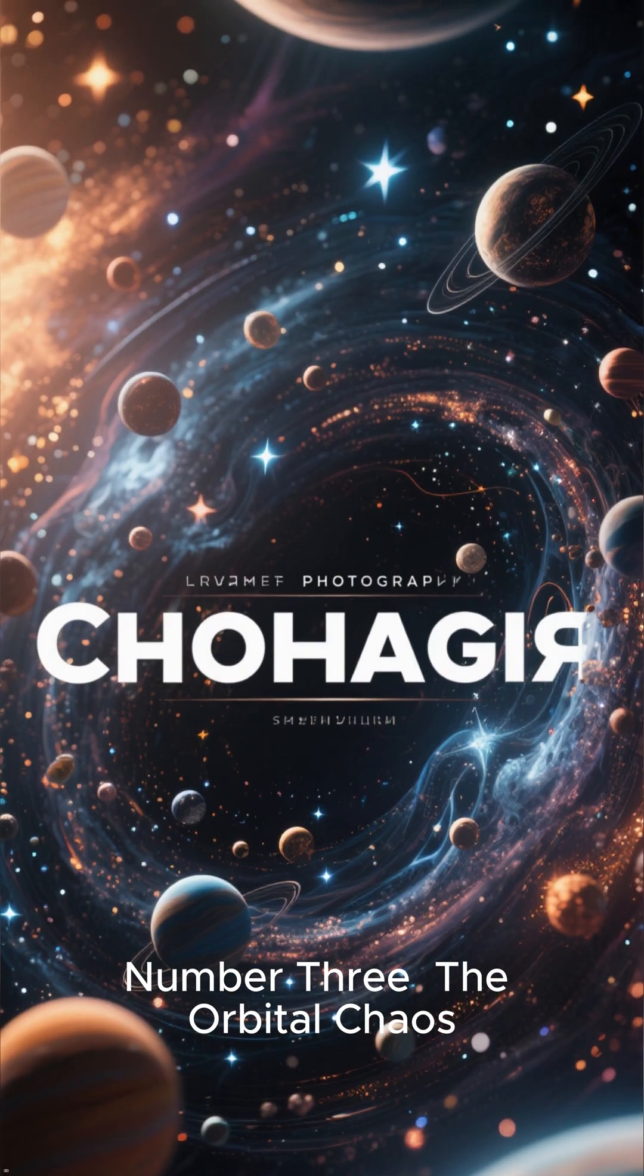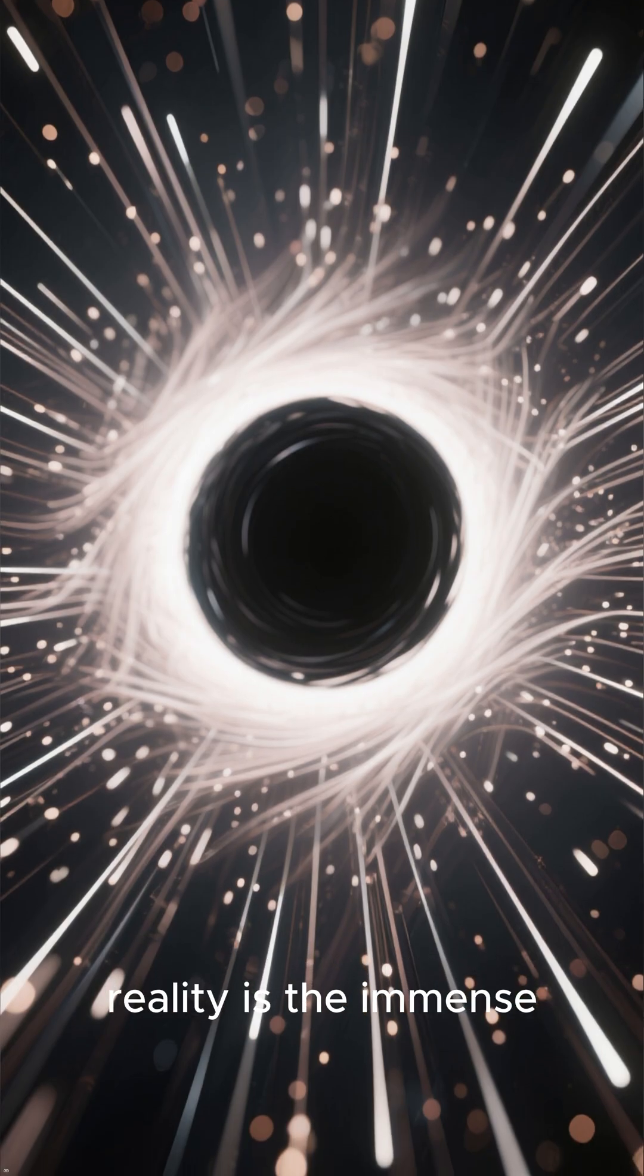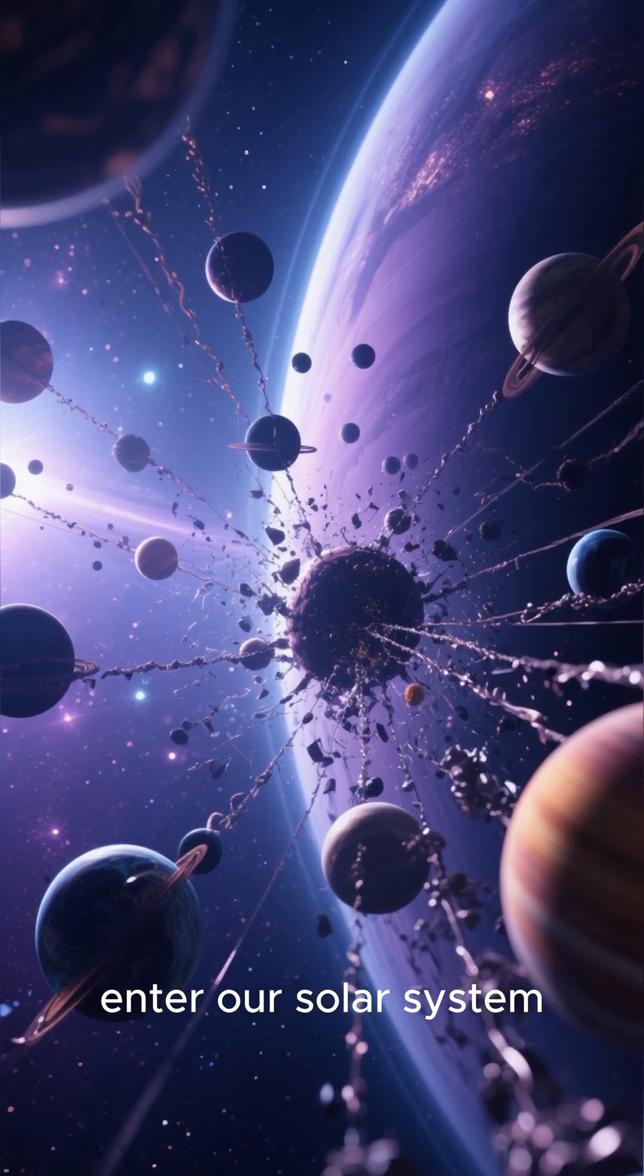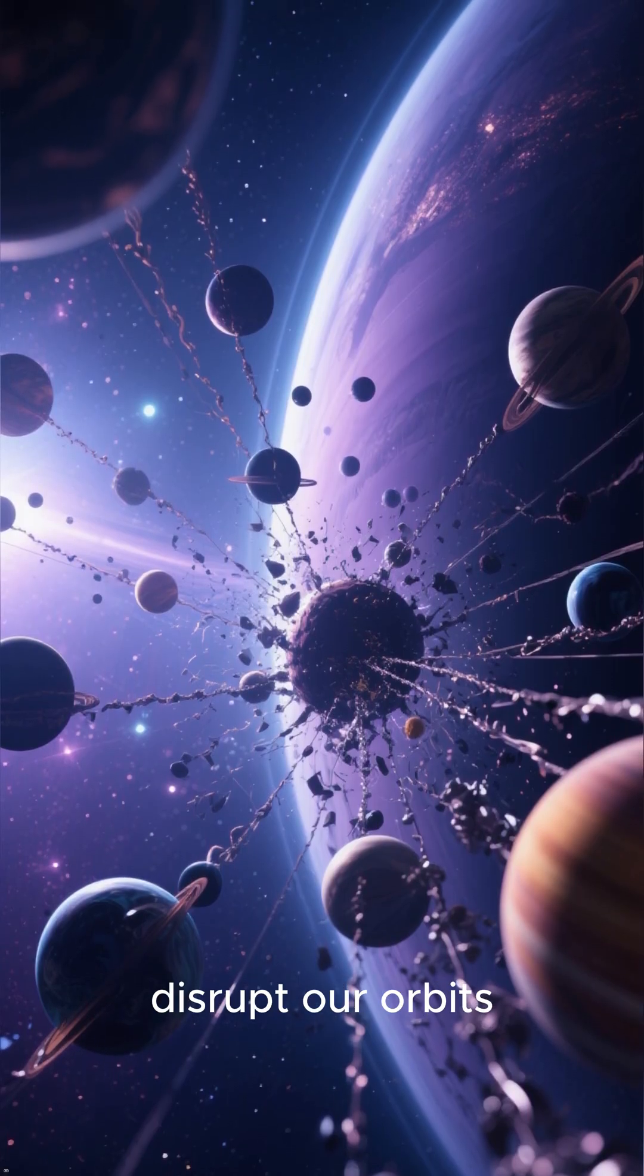Number 3. The Orbital Chaos. The third terrifying reality is the immense gravitational influence of a black hole. If a stellar-mass black hole were to enter our solar system, its gravity would completely disrupt our orbits.